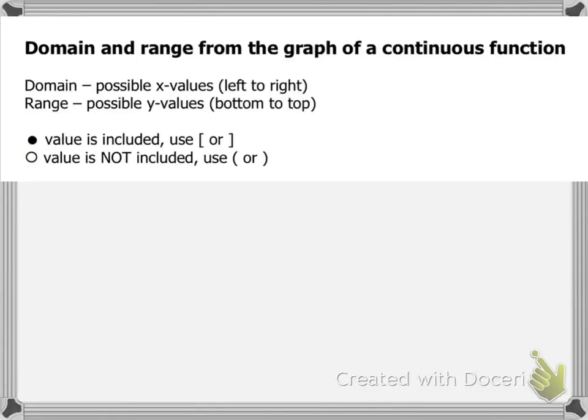We're going to look at the domain and range from the graph of a continuous function. Domain is the possible x values, so on our graph we're going to be looking left to right for domain. Range is the possible y values, so on our graph we're going to be looking bottom to top.